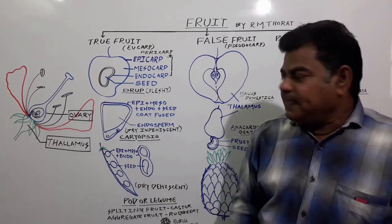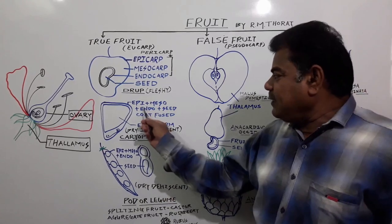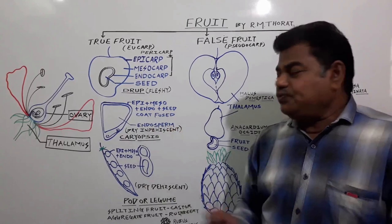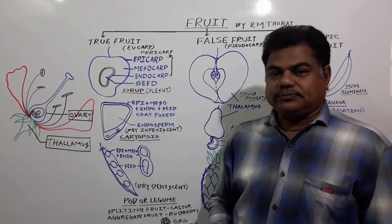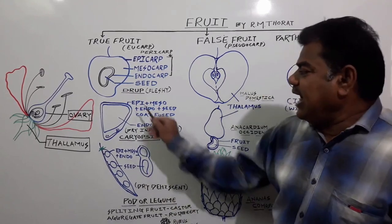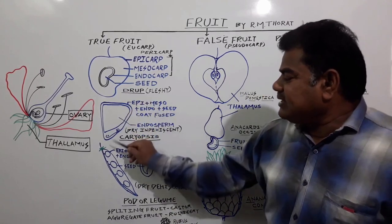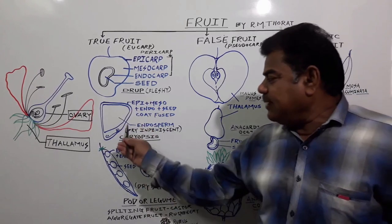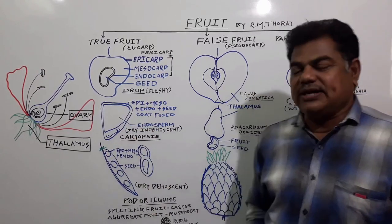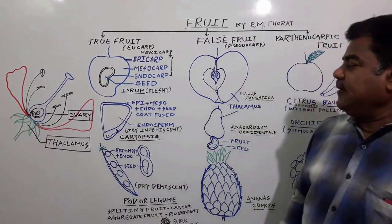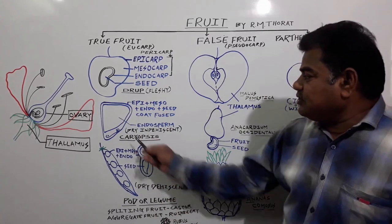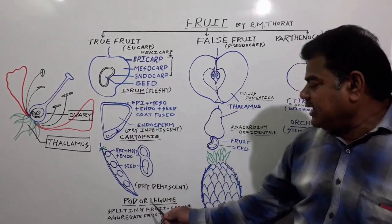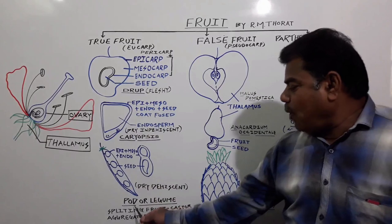It is a dry fruit because the epicarp, mesocarp, and endocarp get fused with the seed coat, and inside this the endosperm persists as it is, and the embryo is present in the embryo axis. Next, this is also a true fruit — next is a pod or legume in the case of a leguminous plant.